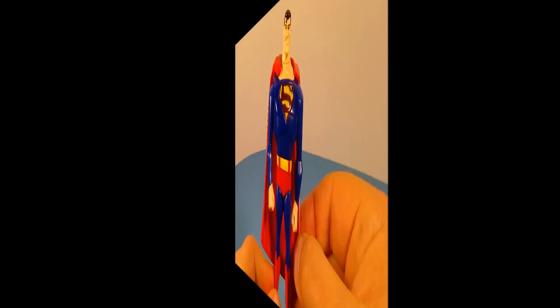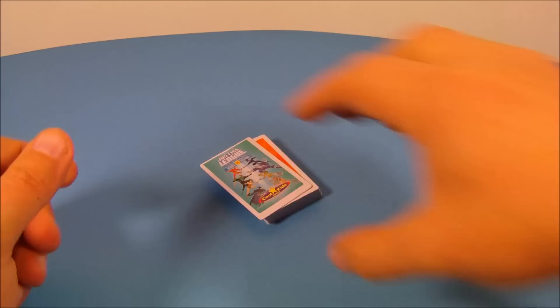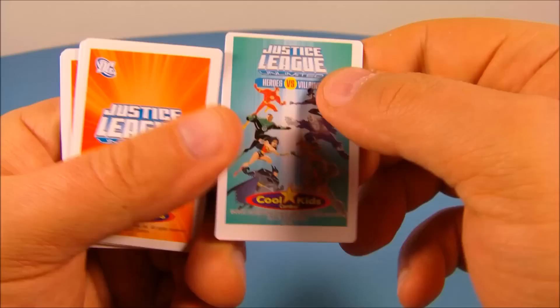And last up in the set we have the Heroes vs. Villains card game. So there's the little box. I already took the cards out. Inside the box you get 25 cards, one being the instructions. So you can see all the Heroes vs. Villains right there. You flip it over and there are the instructions.